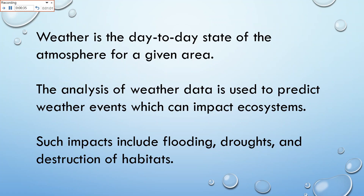Some of these impacts could include flooding, droughts, and destruction of habitats. That's code for if they tell you there's going to be high winds and tornadoes or a hurricane, that kind of hints that there's going to be some flooding or some destruction.